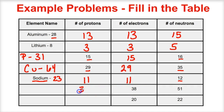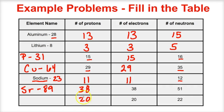For the element with 38 electrons: a stable atom has equal protons and electrons, so 38 protons. Number 38 on the periodic table is strontium. With 51 neutrons, the mass number is 51 plus 38 equals 89 — strontium-89. For 20 electrons: 20 protons, so number 20 is calcium. With 22 neutrons, the mass number is 22 plus 20 equals 42 — calcium-42.